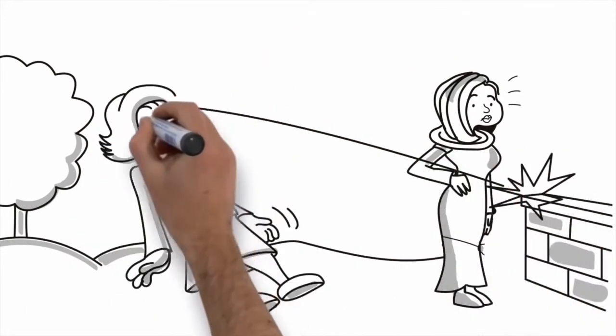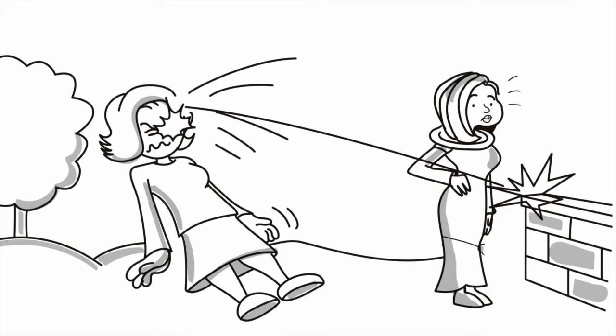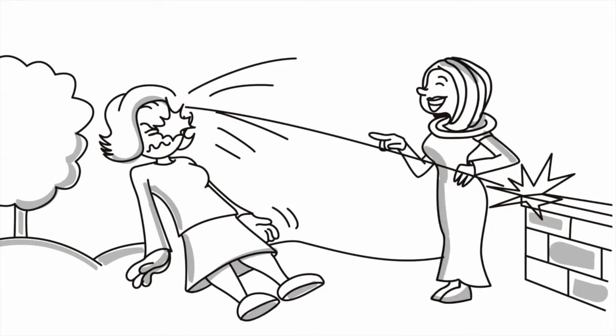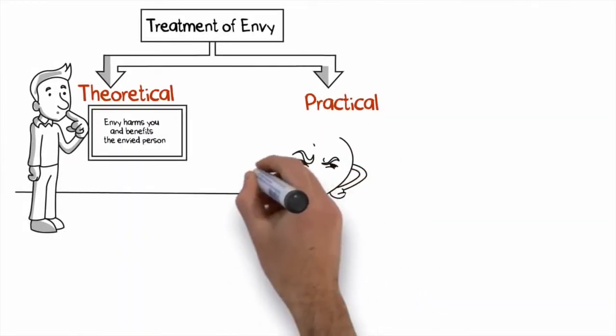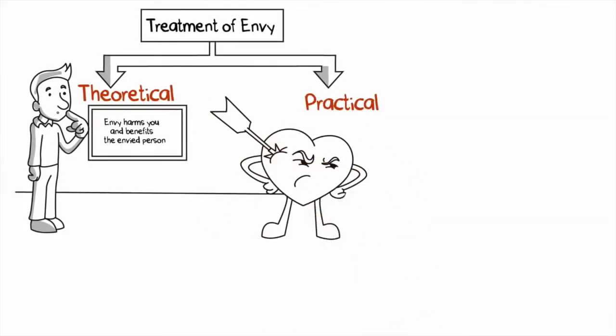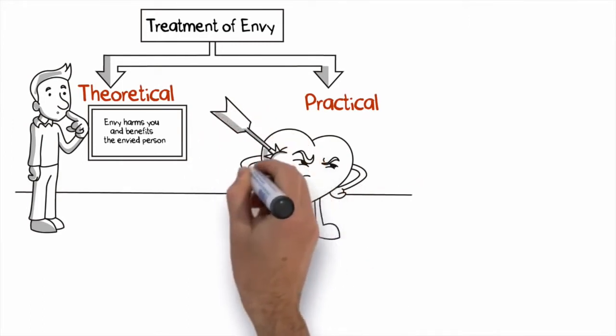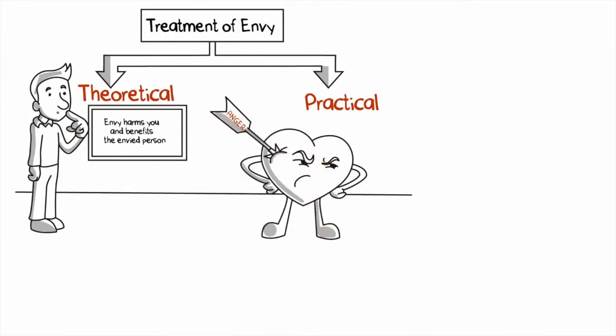and it returns to hit her in the right eye and blind it. Her anger increases. Again, she throws harder, and it returns to strike her in the other eye and blind it. She throws again, and it returns to strike her on the head. She does this while her enemy is unharmed, and who sees her and laughs.